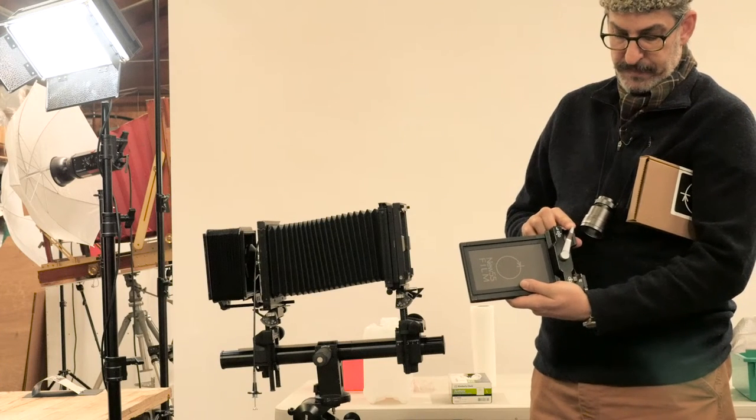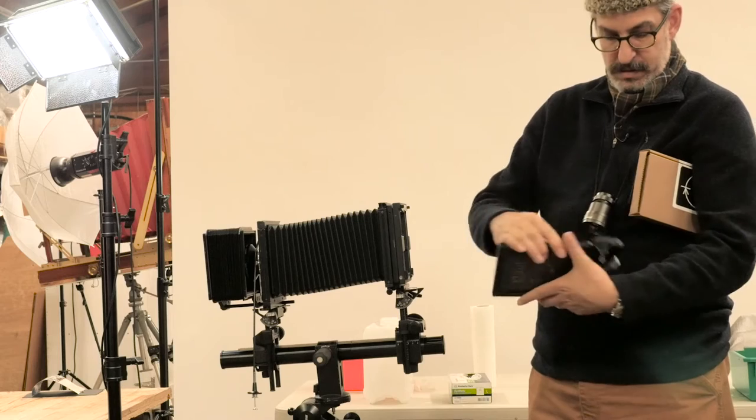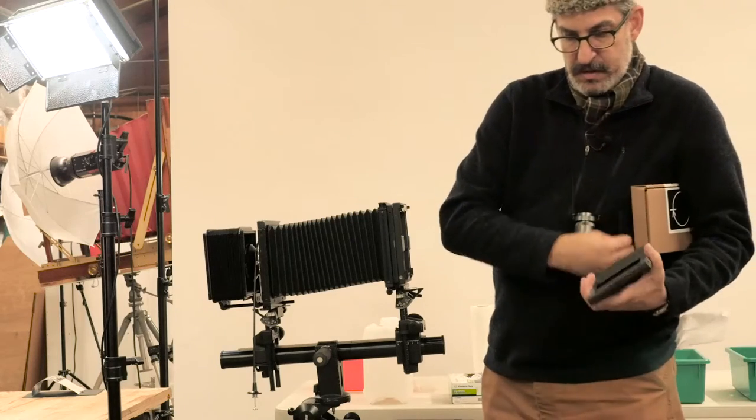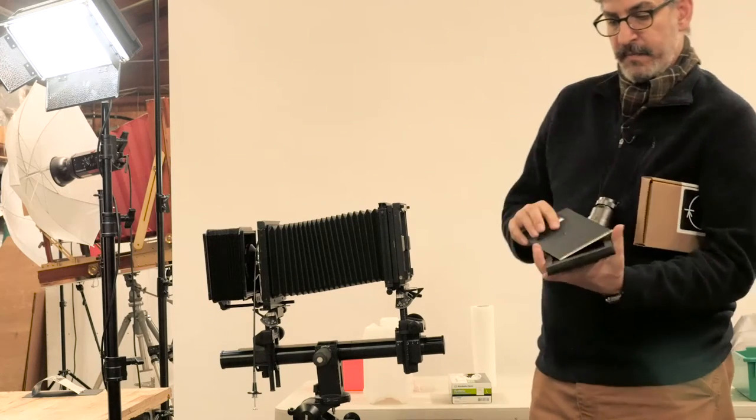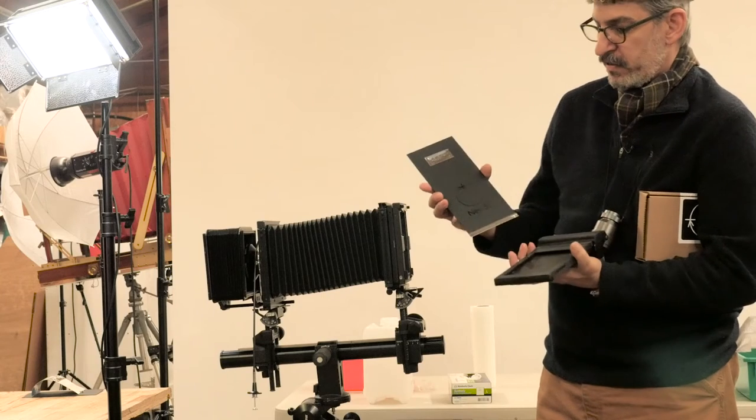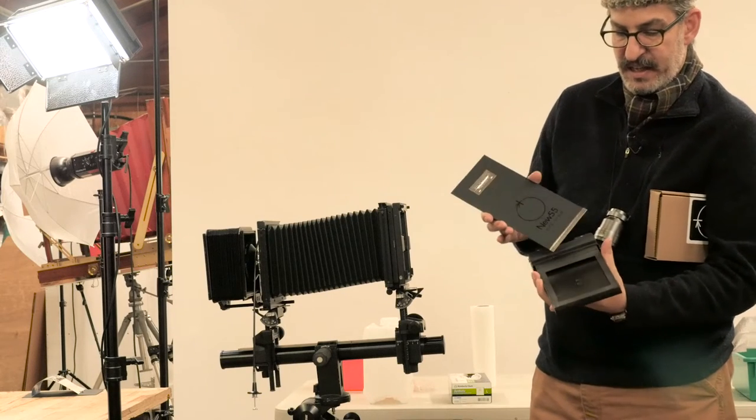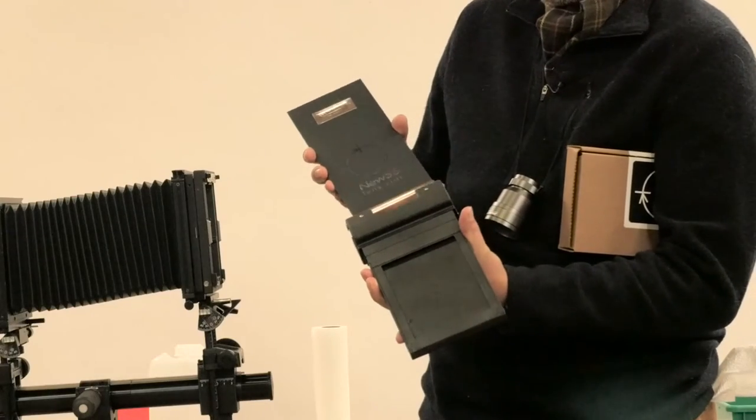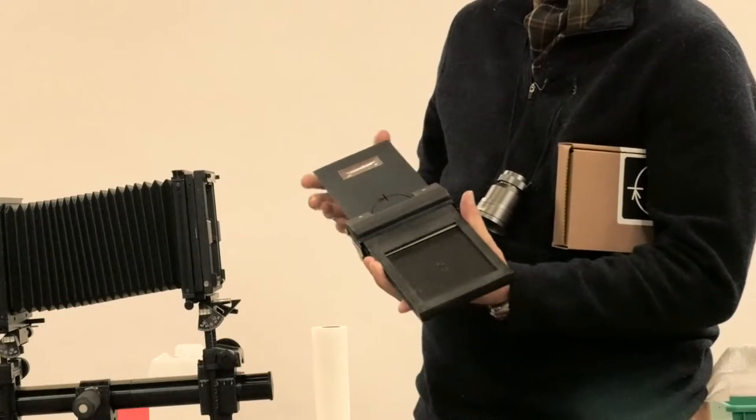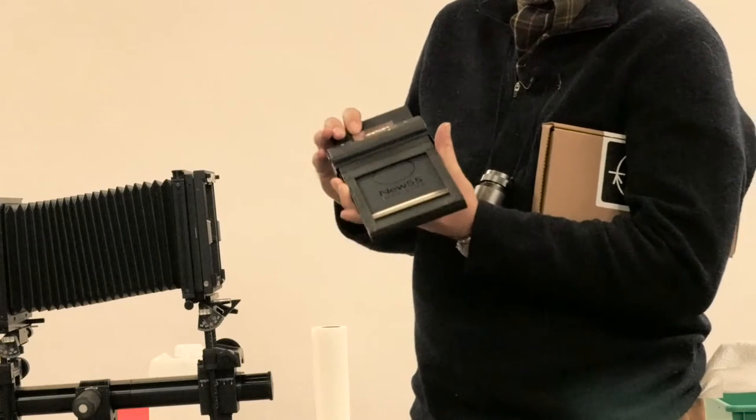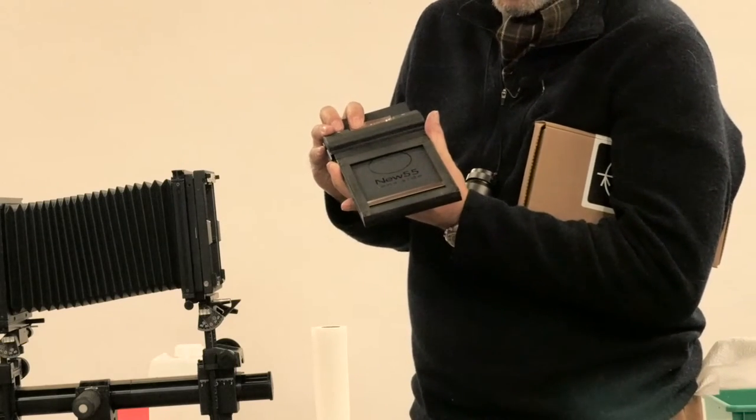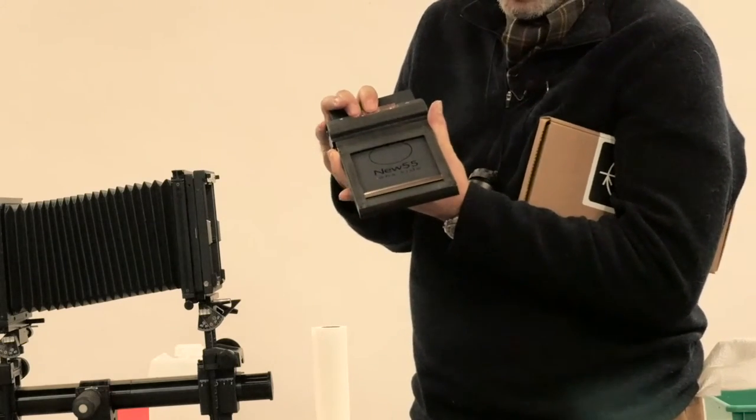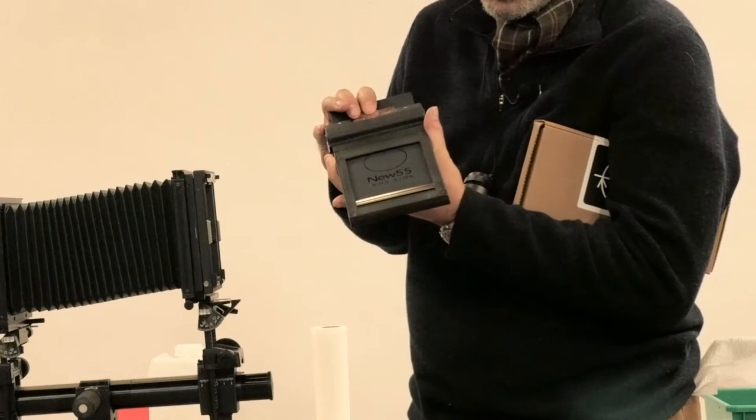And I can insert my film packet, making sure that the New 55 lens side is facing through the frame of the holder, which is the lens side of the camera. I want to make sure that the finger of the holder makes a little clicking sound as I push the packet home.